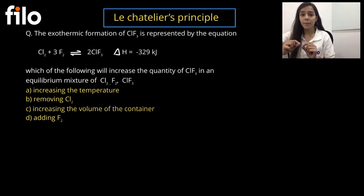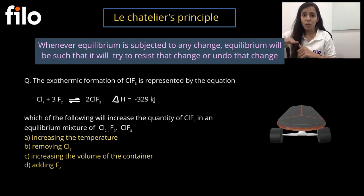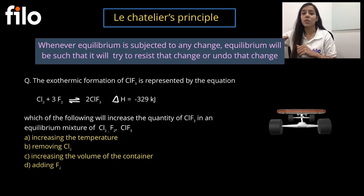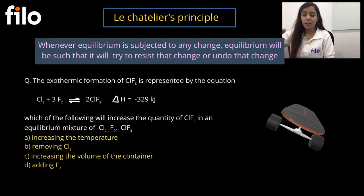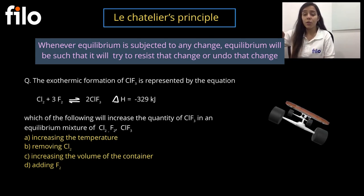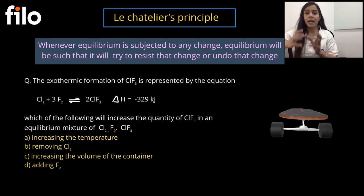The Le Chatelier principle says that whenever equilibrium is disturbed by any means, if there is stress on it, the equilibrium will behave in such a way that it will try to oppose that change or resist that change to attain stability. It's just like when you are skateboarding and your skate goes towards the right direction, you lose balance and have stress. To prevent yourself from falling, you come to a stable state by pulling your body towards the left direction for the sake of stability.